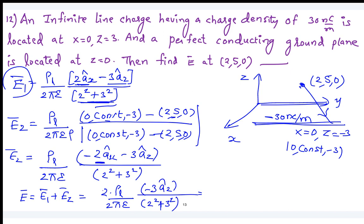Substituting rho_l equal to 30 times 10^-9, the answer is minus 249 az volts per meter. Correct.